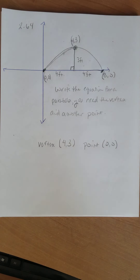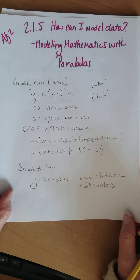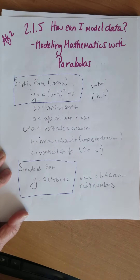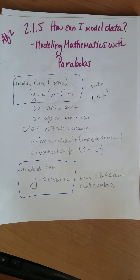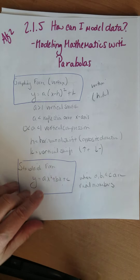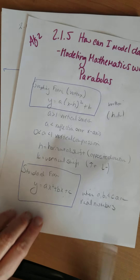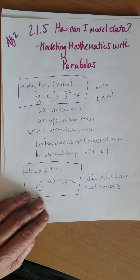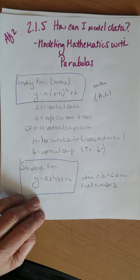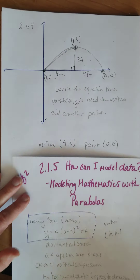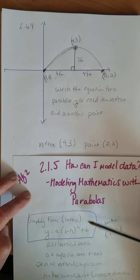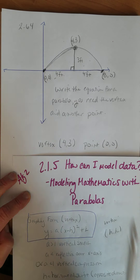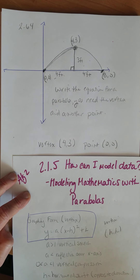Which form should we use — graphing form or standard form? In standard form, if all I have is an x and a y to substitute, I still have a, b, and c. I can't solve an equation with three variables. But in graphing form, the vertex gives me h and k, and my point gives me x and y. All I have to do is find the a value. So we need to use graphing form: y equals a times the quantity x minus h squared plus k.